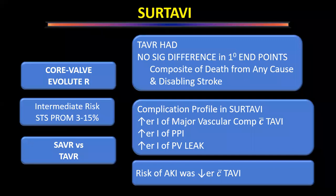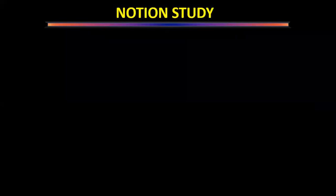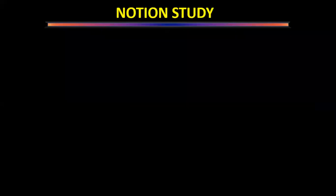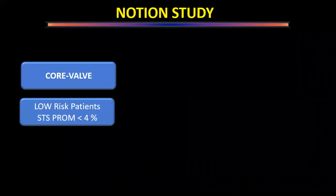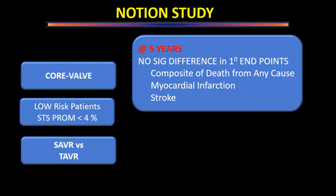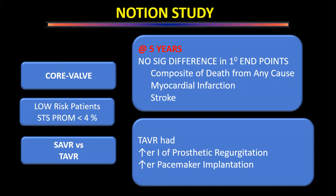The Notion study used CoreValve in low-risk patients (STS PROM <4%) and is the only study with five-year results in low-risk patients. It showed no significant difference at five years in the primary composite endpoint of death from any cause, myocardial infarction, and stroke. However, incidence of prosthetic valve regurgitation and pacemaker implantation is higher with TAVI — a concern that has not been fully resolved for TAVI in low-risk patients.